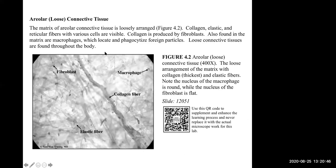Here is loose areolar connective tissue. It's loose, so the fibers are loosely arranged. Collagen is produced by fibroblasts and loose connective tissue is found throughout the body as a filler or packing material. Collagen fibers are much thicker than elastic fibers — you can see the collagen fibers have a wider diameter, and you can see some of the other cells highlighted there.